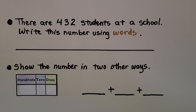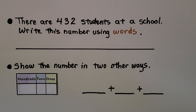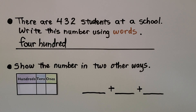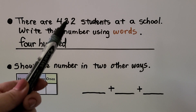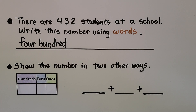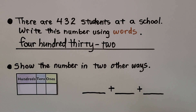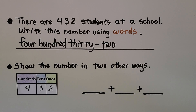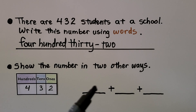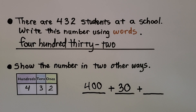There are four hundred thirty-two students at a school — write this number using words. We start with the hundreds place and write 'four hundred.' We look at the tens and ones together — we have thirty-two. We use a hyphen in 'thirty-two' because it ends with a two. We can also show this in a place value chart as four hundreds, three tens, two ones, and in expanded form as four hundred plus thirty plus two.